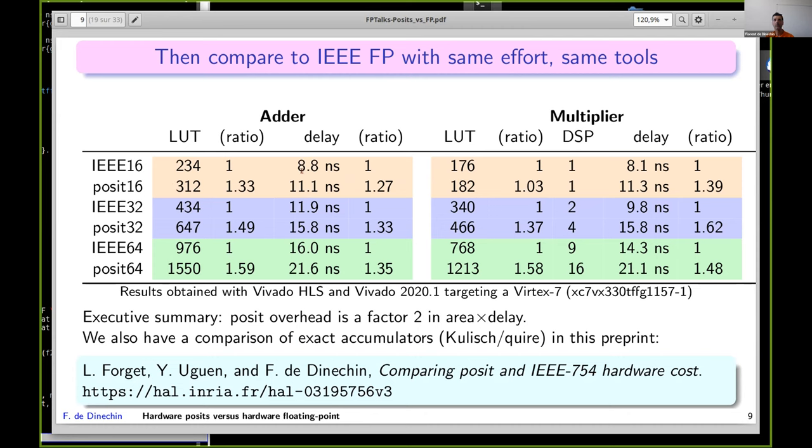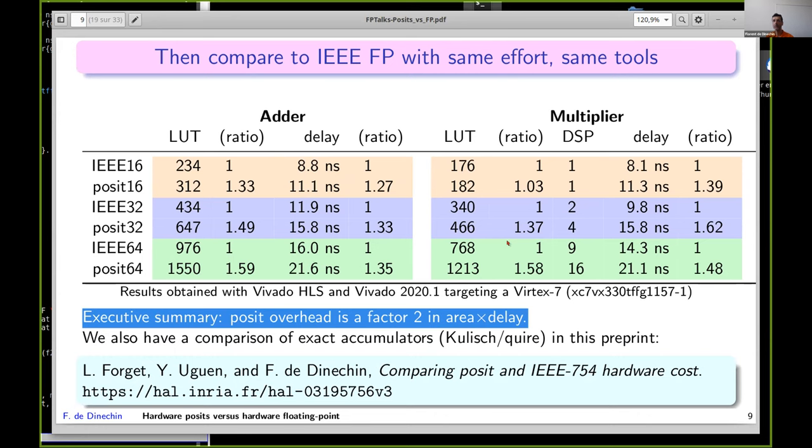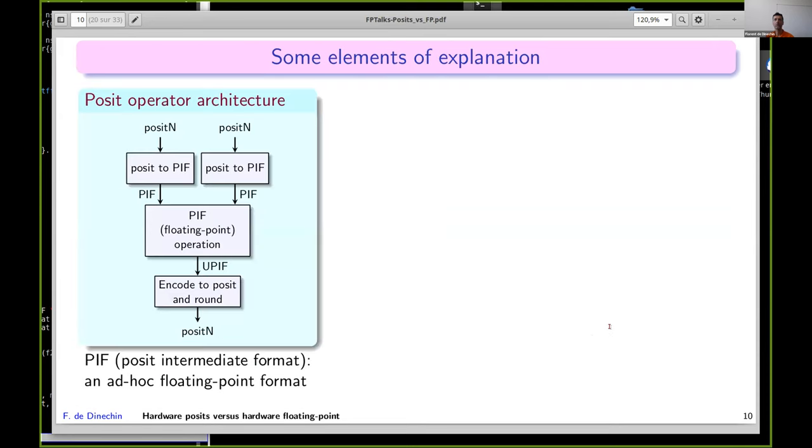Now that we have the state of the art in posits, we can compare to IEEE implemented with the same level of care. These are the absolute measures in terms of area consumption and delay—all for combinatorial operators, no pipeline or whatever. We also compute the ratio, and you see that the ratio of posits over IEEE is consistently above one. The executive summary is there's an overhead of about a factor of two if you multiply these numbers. There's a much larger overhead in terms of multiplier consumption, but that's an artifact of the technology we use in FPGAs. Posits are not that much more expensive in terms of multipliers; it's just the technology that makes them look like that. But all the other numbers are fairly trusted.